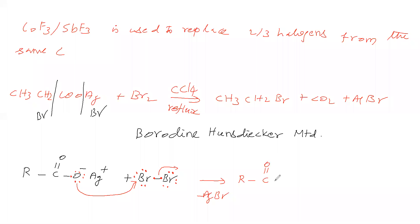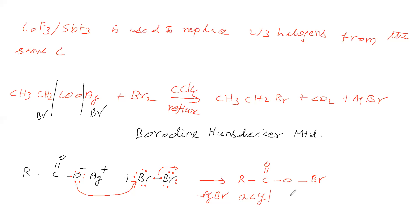As this bond migrates, Br minus is released and Ag+ becomes AgBr. A dative bond forms between O minus and Br. The resulting compound RC(=O)O-Br is called Acyl Hypo Bromite.